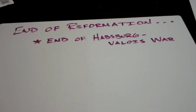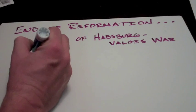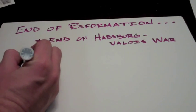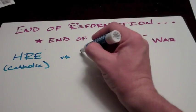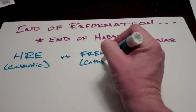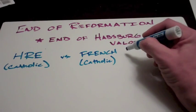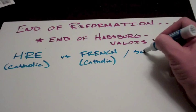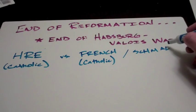During this war, we had two sides. You had the Holy Roman Emperor, who was Catholic, versus the French, who were also Catholic — which is why this is not a religious war. You have Catholic versus Catholic here. The French were teaming up with the League of Protestant Nations within the Holy Roman Empire, within Germany, known as the Schmalkaldic League, which is Protestant.